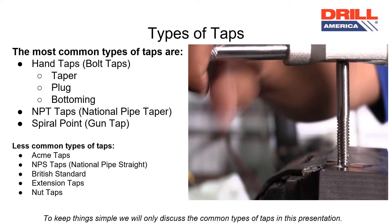Taps are categorized by many different features. The most common types of taps are hand taps, which include taper, plug, and bottoming taps, and NPT taps, which are also called pipe taps.